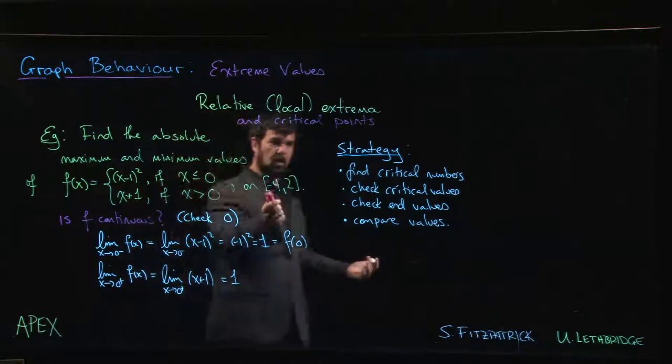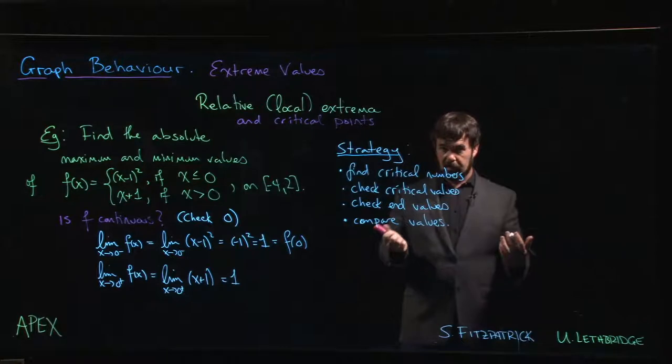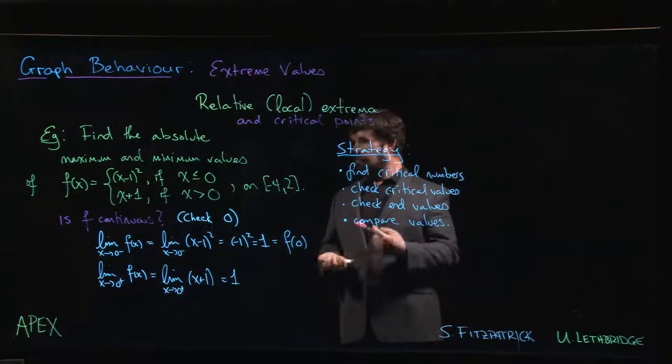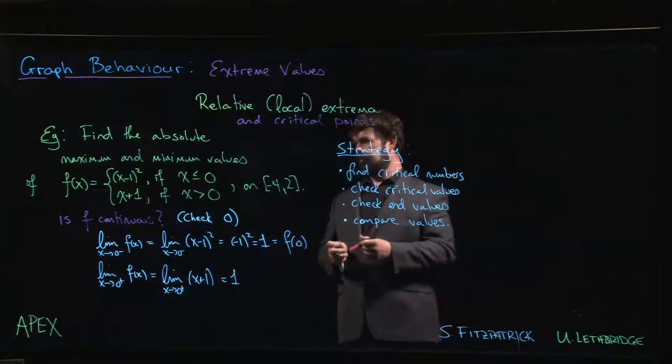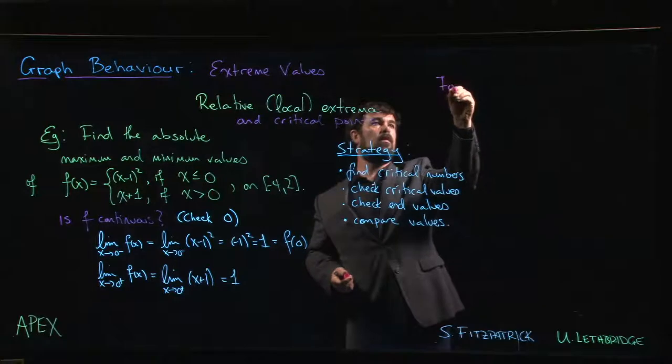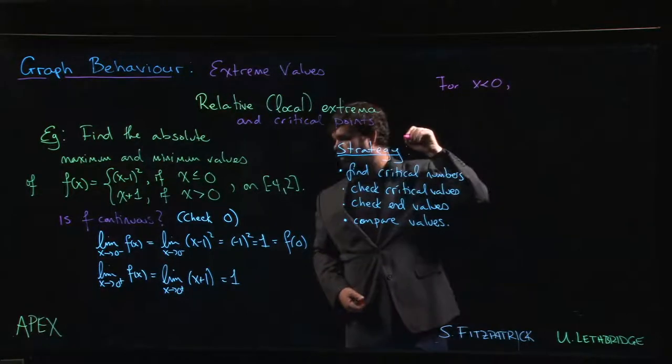All right, so we've established continuity, so we have our continuous function on a closed interval, which means that our strategy here for finding extreme values applies. Now that we've done that, we can look for critical numbers. So for X less than 0, the chain rule will tell us that f prime of X is 2 times X minus 1.